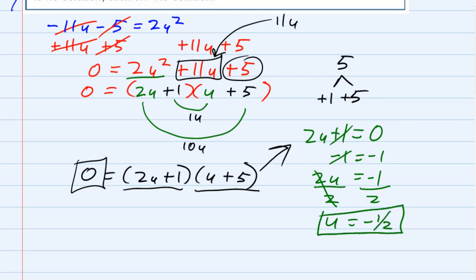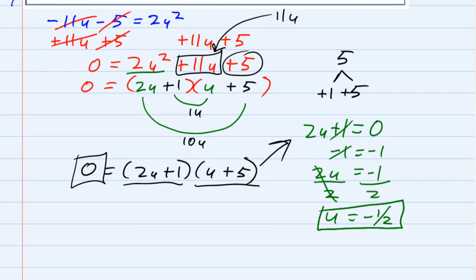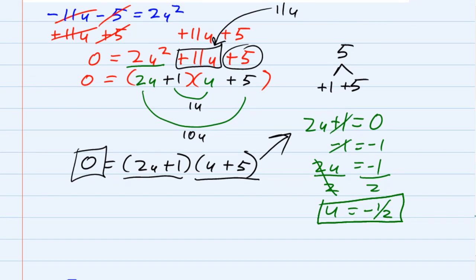So that's one possible solution. Of course, the other one would be, what if the u plus 5 were equal to 0? Those are my two possibilities, either 2u plus 1 or u plus 5. So solving that one, subtracting the 5 over, gives me u equals negative 5.